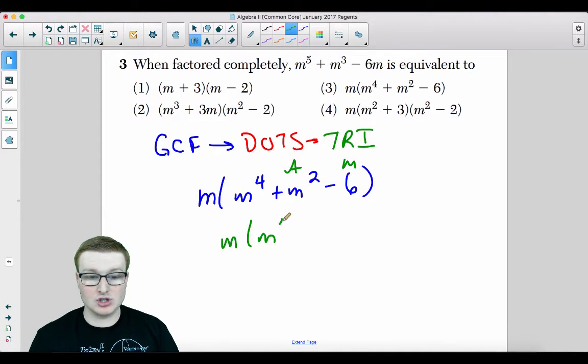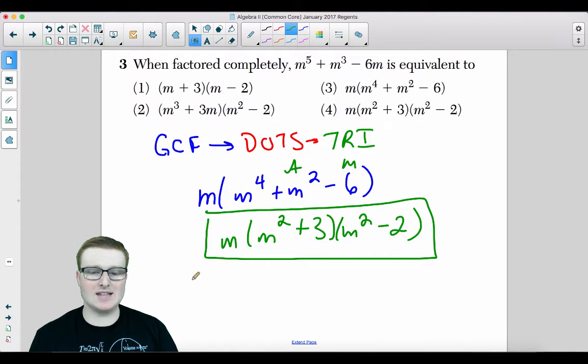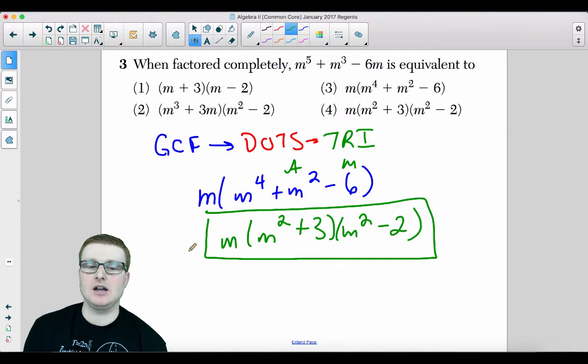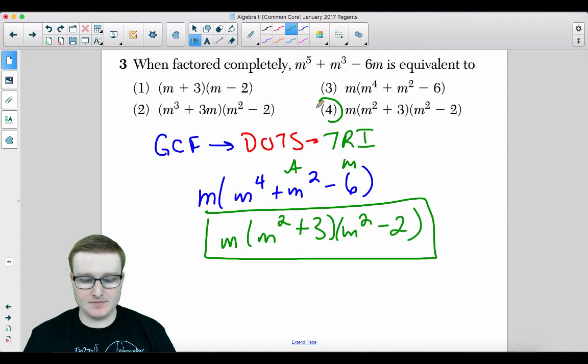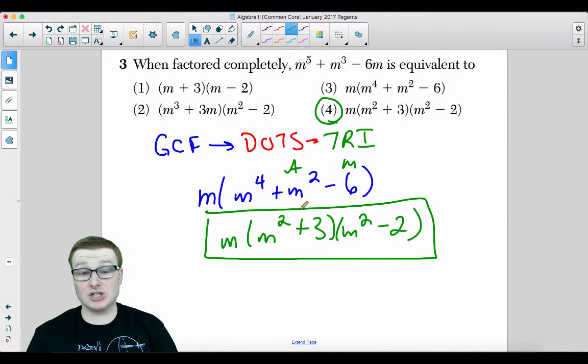That's just going to be m times m squared plus 3 times m squared minus 2. And that, ladies and gentlemen, is your answer. They say factored completely. Whoever wrote this question is actually mathematically correct. You could actually factor this a little bit further. But they indicate choice 4 is the answer. Perfectly fine. If you want to know why you could factor this more, send me an email. I'll tell you why.